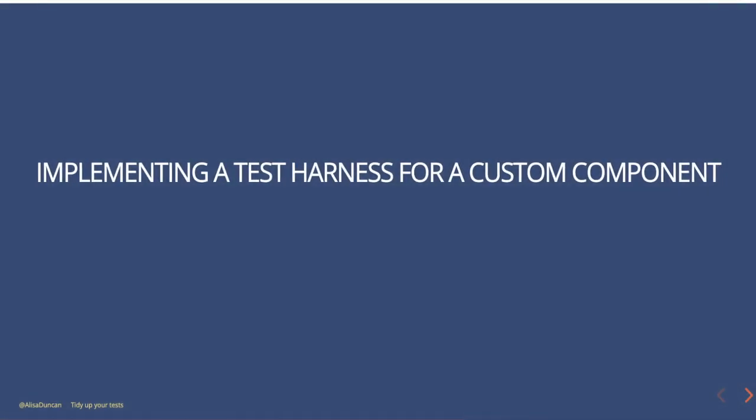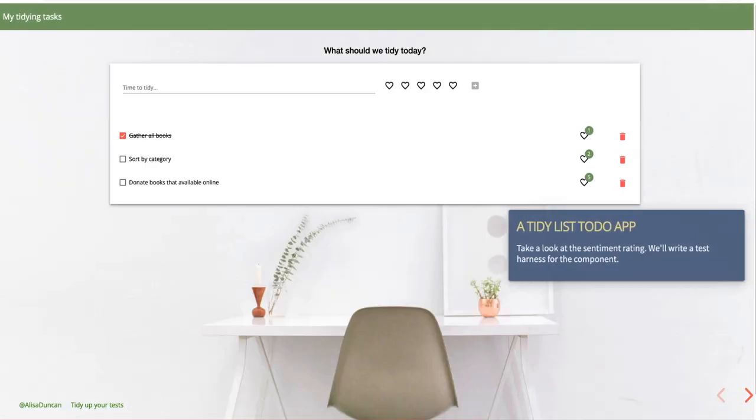The really cool thing is you can also implement your own custom component test harness using the CDK API. This is particularly helpful if you have a core component that you reuse a lot in your application — maybe an implementation of a UI control, or just a component you want to write a test harness for. Either way, this is a really powerful tool. So let's take a look at how to do this by going back to our to-do app.